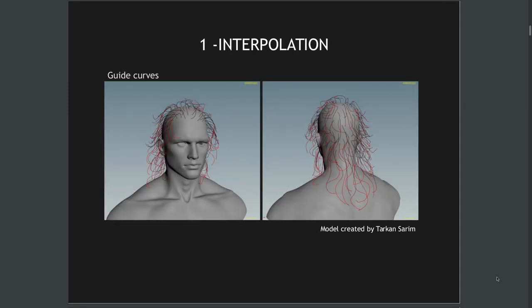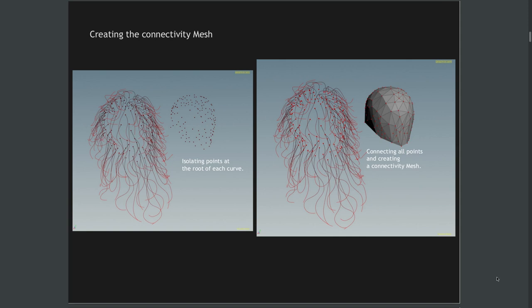The first thing is the interpolation system, which I think is the most challenging problem in a hair system. My starting point is geometry and guide curves created by Tarkan Sarim, a great groomer who was kind enough to provide this data. I'm going to ignore the geometry and focus on the curves, deleting all points except the root points to create a point cloud, then mesh it to generate a connectivity mesh using a Delaunay triangulation node in Houdini.